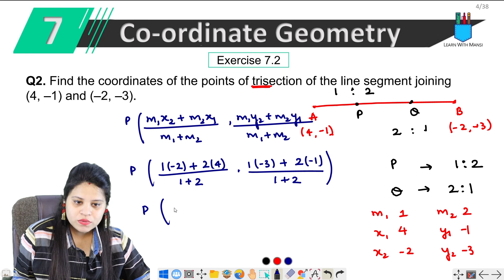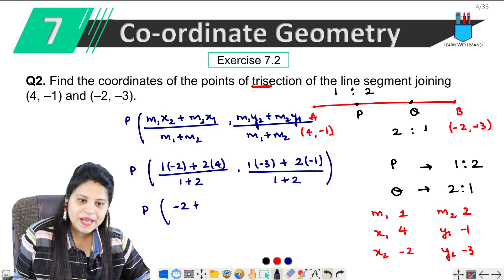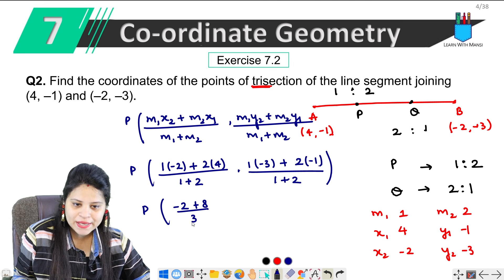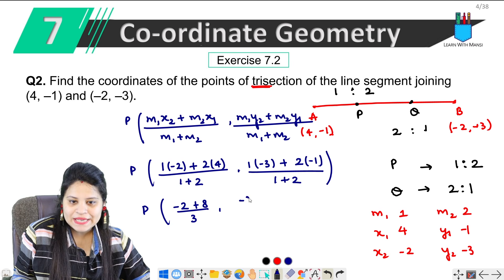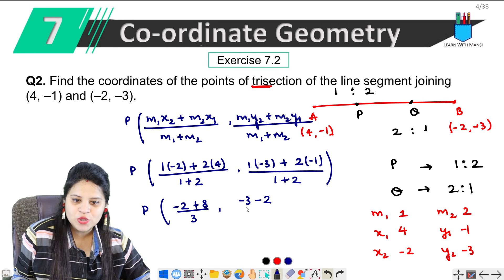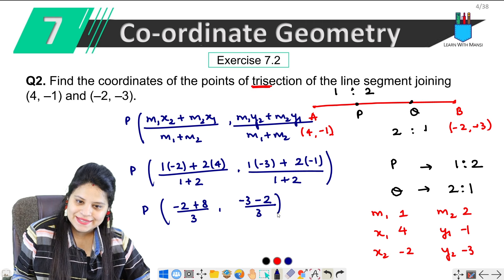1 into -2, -2, plus 4, 2's are 8, upon 2 + 1, 3. Then -3, -2, upon 3. Okay?